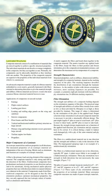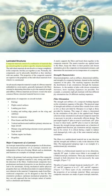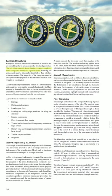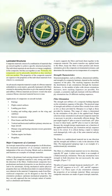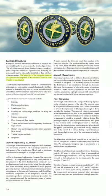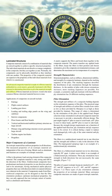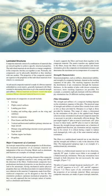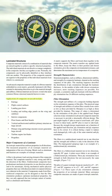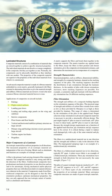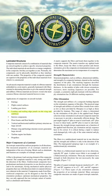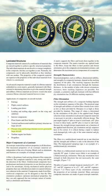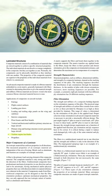Section 7-1: Laminated Structures. Composite materials consist of a combination of materials mixed together to achieve specific structural properties. The individual materials do not dissolve or merge completely, but act together as one. Normally, the components can be physically identified as they interface with one another. The properties of the composite material are superior to the properties of the individual materials. An advanced composite material is made of a fibrous material embedded in a resin matrix, generally laminated with fibers oriented in alternating directions to give the material strength and stiffness. Applications of composites on aircraft include fairings, flight control surfaces, landing gear doors, leading and trailing edge panels, interior components, floor beams and floorboards, vertical and horizontal stabilizer primary structure, primary wing and fuselage structure, turbine engine fan blades, and propellers.